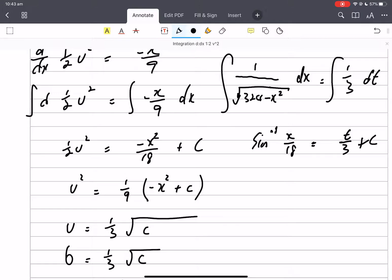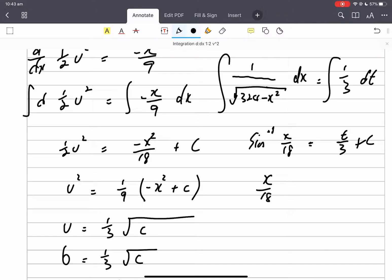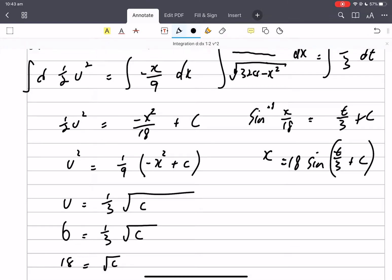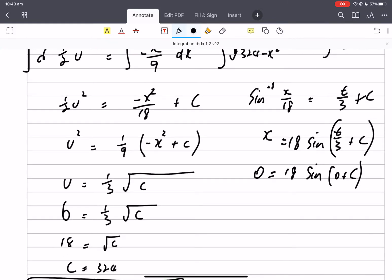So x on 18 equals sine of t on 3 plus c. Let's get that 18 to the other side. We're going to assume the displacement is zero when time is zero. Sine of zero is zero, so that means c equals zero.